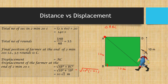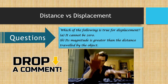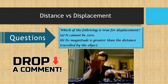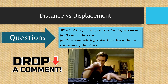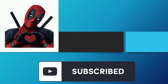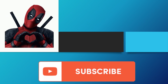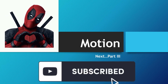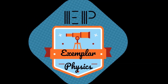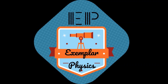If you have any doubts, the comment section is always open and I'll surely help. Here is the homework question: Which of the following is true for displacement? A — it cannot be zero. B — its magnitude is greater than the distance traveled by the object. Drop your answer in the comment section. That's the end of the video. Thank you for watching. Please subscribe to the channel and share it with your friends and family. We will be coming soon with Part 3. Thanks for watching!